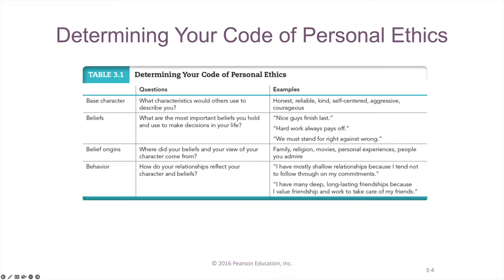How do you determine your code of personal ethics? If you look at different parameters, one of them is base character. Ask the question: what characteristics would others use to describe you — your friends, your family, or people with whom you have a professional working relationship? What characteristics they use to define you — that defines your base character. Somebody may say this person is really honest.